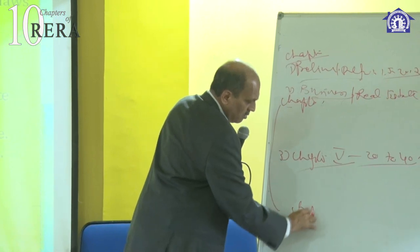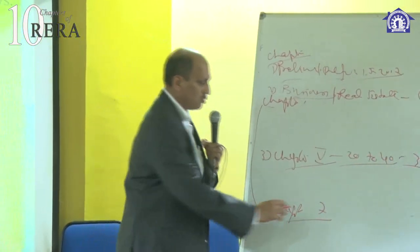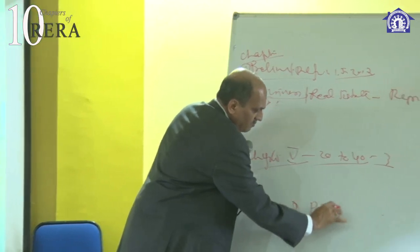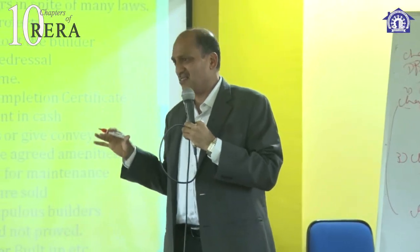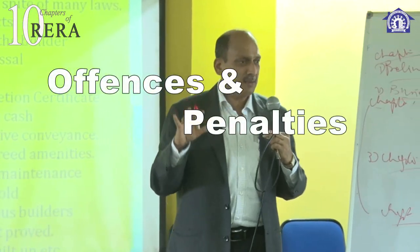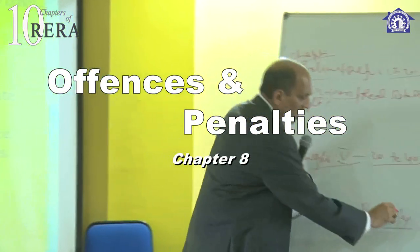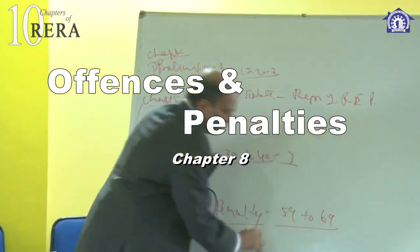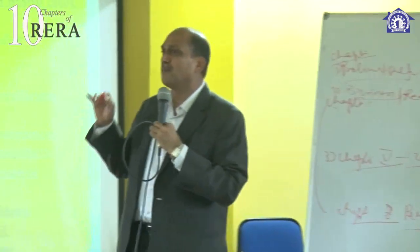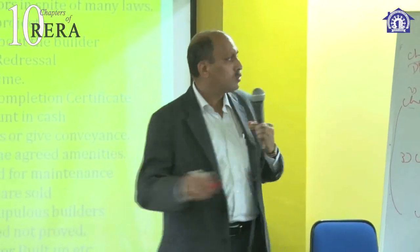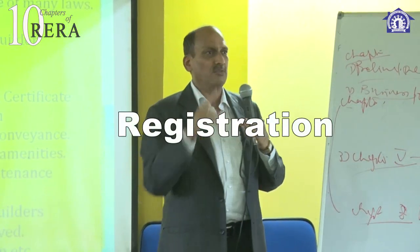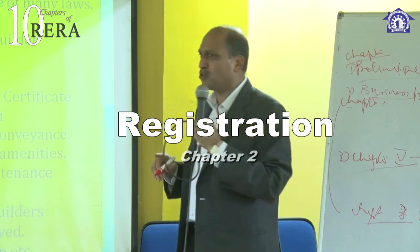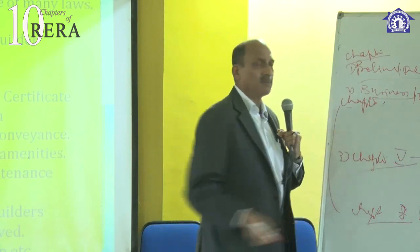Chapter number eight talks about offenses and penalty. If something required under the act is not done, there has to be a penalty. The penalty provisions run from section 59 to 69 — that is 11 sections covering different types of penalties. In real estate business, a project must be registered: what is the project, how it is registered, with whom, within what time, and which projects are exempted — all given in chapter number two.